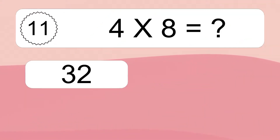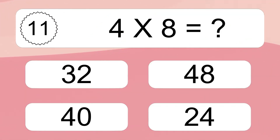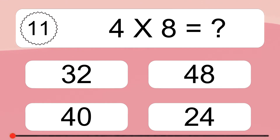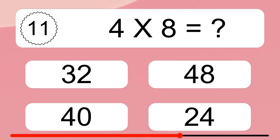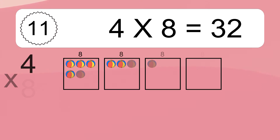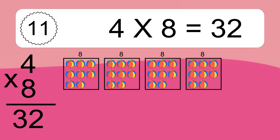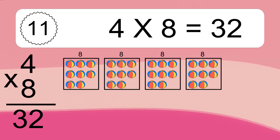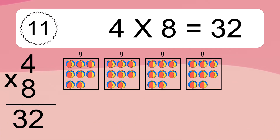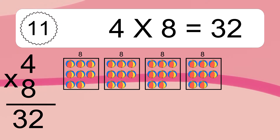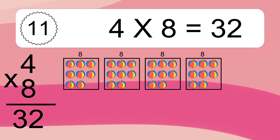4 times 8 equals what? 4 times 8 equals 32. We have 4 boxes, and each box has 8 colorful balls inside. If you count all the balls in all the boxes together, you will have 4 times 8 balls. This equals 32 balls.